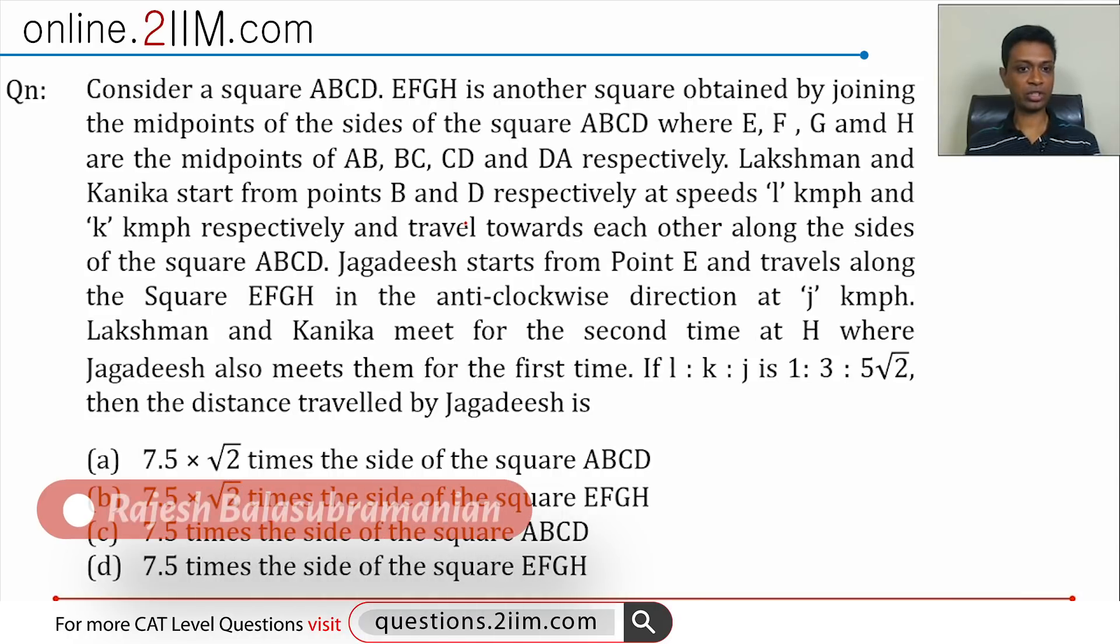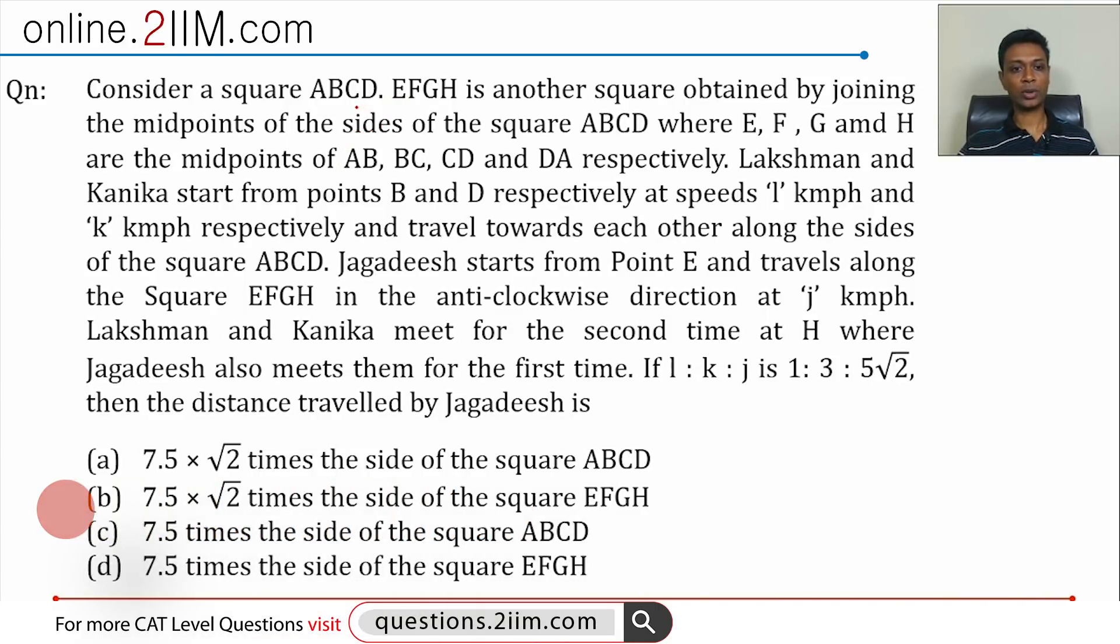This is from speed time distance, a long question. It's a complicated looking question but it's probably not that difficult to solve. I'm going to go over this. Consider a square ABCD. EFGH is another square obtained by joining the midpoints of the sides of square ABCD.